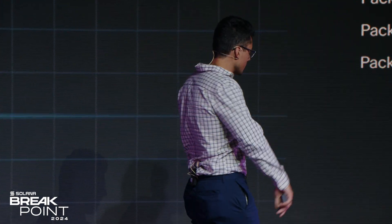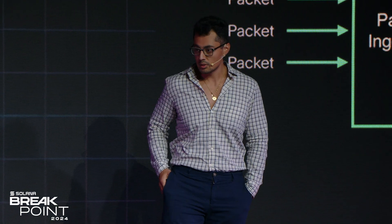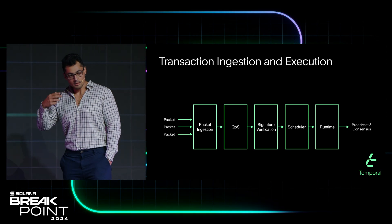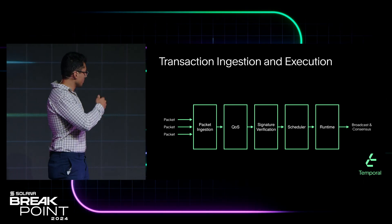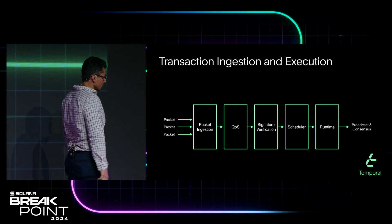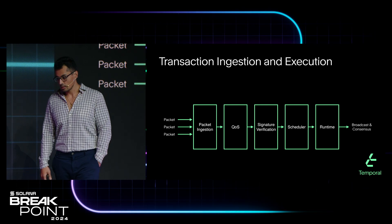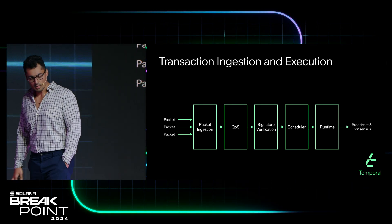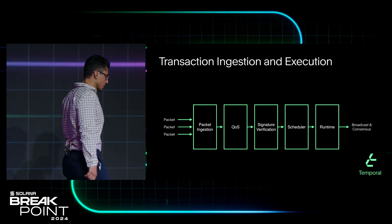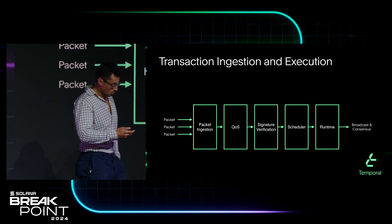We've seen optimizations in QUIC, and now Temporal is working with some of the core teams to research and develop new networking protocols to accelerate packet ingestion. Temporal is also working on QLS, so we need a way to deal with this larger packet volume. And yesterday, we demoed our V0 QLS working at 1.4 million TPS per core.